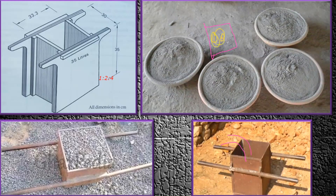For the coarse aggregate, since the ratio is 4, I fill the firma box with coarse aggregate and pour it four times. In this way, we have prepared the mix ratio of 1:2:4. This entire process is based on the volume of the firma boxes, so it is called volume batching.